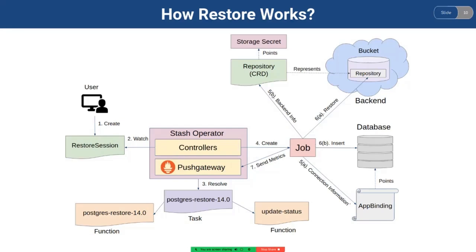The job gets the backend information from the Repository CRD and the storage secret respectively. The Repository CRD points to the storage secret for getting its backend credentials.